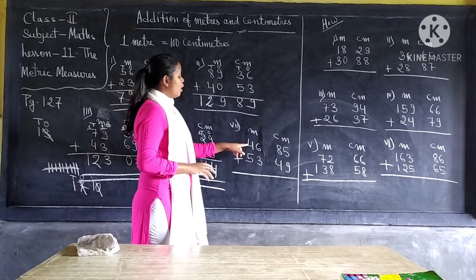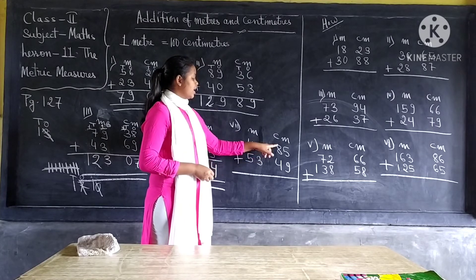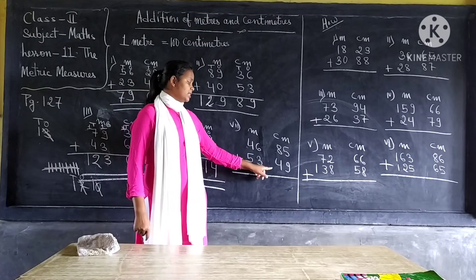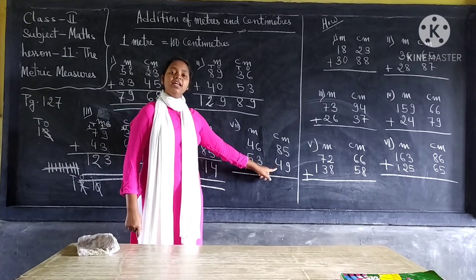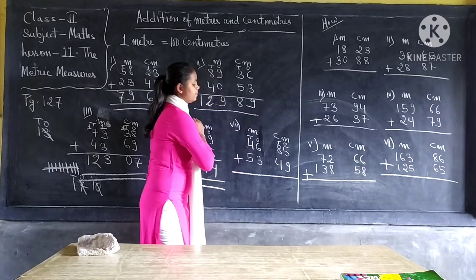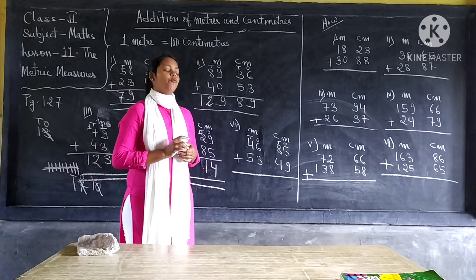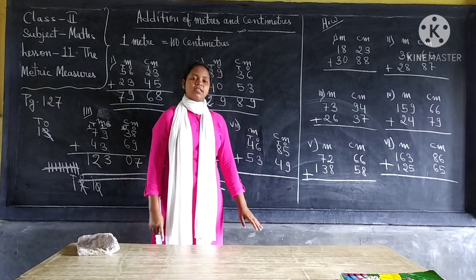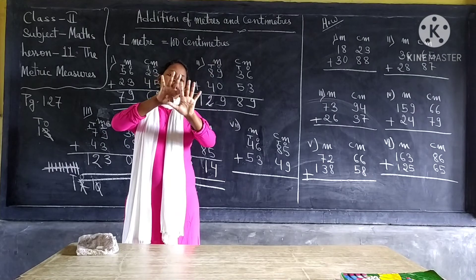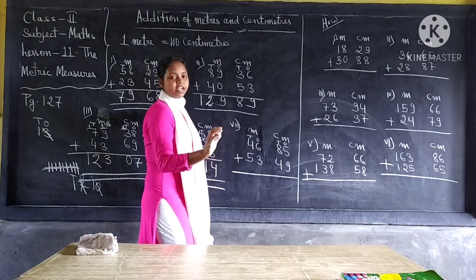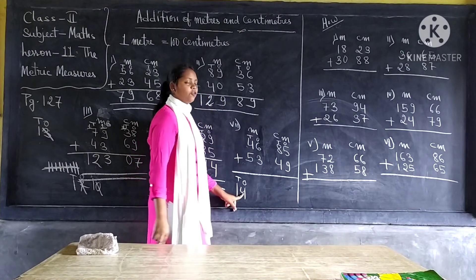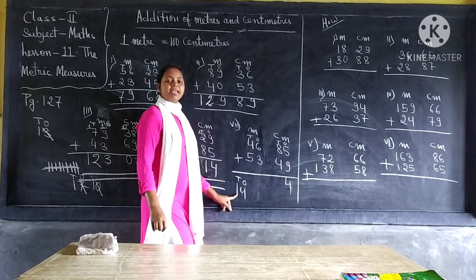Our last question is forty-six meters and eighty-five centimeters plus fifty-three meters and forty-nine centimeters. For your understanding, just write tens and ones. Under the centimeter, we have tens and ones. Under ones, we have five ones and nine ones. Five plus nine equal to fourteen, but we cannot write fourteen directly. So we write four under ones, and this one ten we will carry it and write it under tens.